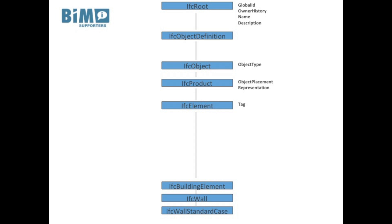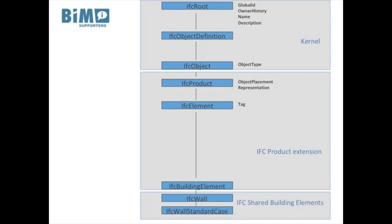An IFC wall standard case is a subtype or specialization of an IFC wall, which is a specialization of an IFC building element, which is a specialization of an IFC element, which is a specialization of an IFC product, which is a specialization of an IFC object, which is a specialization of an IFC object definition, which is a specialization of an IFC root. IFC root is the most abstract definition of identifiable entities in IFC. An IFC root object has a globally unique identifier, also known as a GUID. It also has a name and a description. This means all specializations of an IFC root will have a GUID, a name and a description, because these specializations inherit the property definitions. This specialization structure is the same as we saw in the schema structure overview.